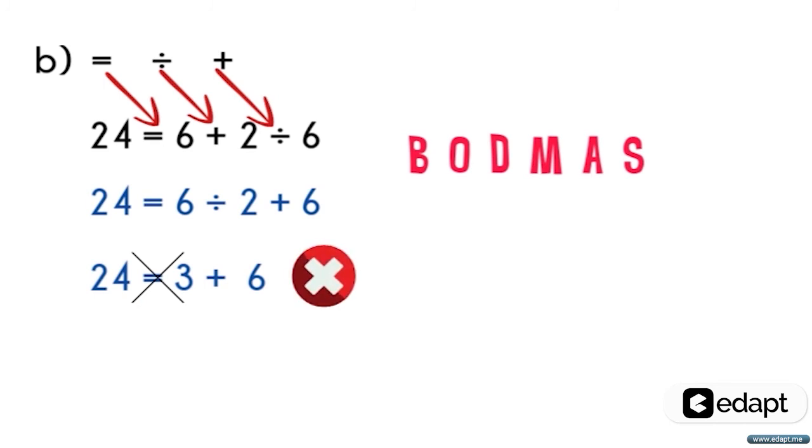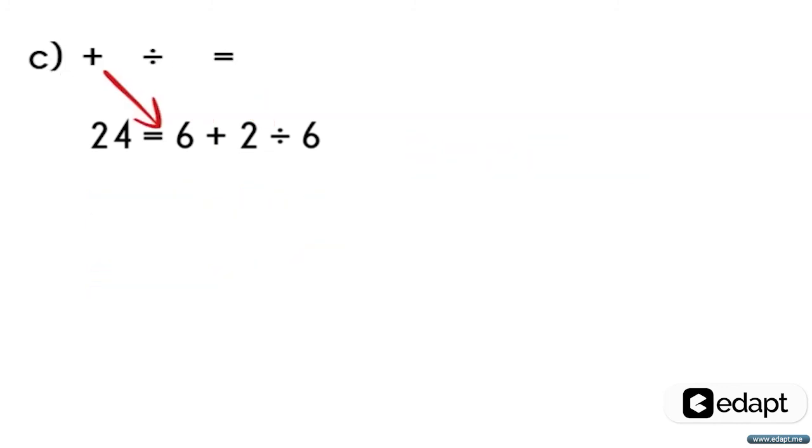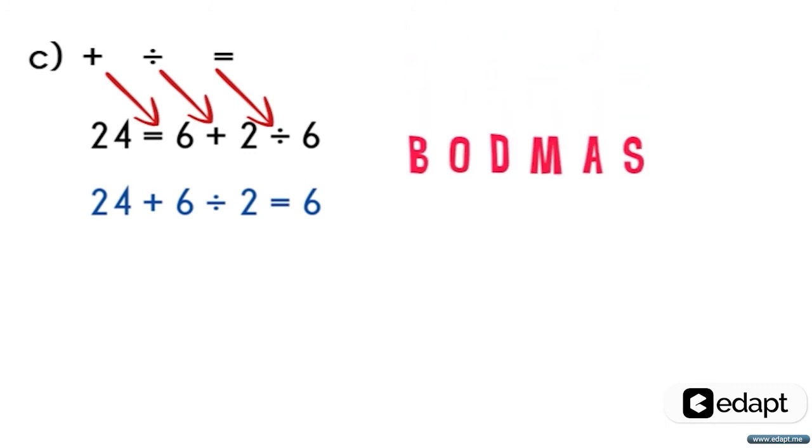Now let us go with option C. The equation will become 24 plus 6 divided by 2 is equal to 6. Now by applying the BODMAS rule, the division order gets as 6 divided by 2 is equal to 3, and 24 plus 3 is not equal to 6. Hence option C is also false.